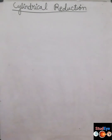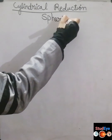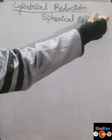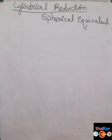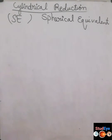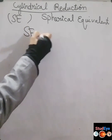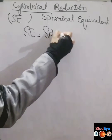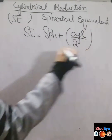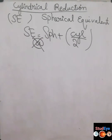Today we are going to discuss cylindrical reduction. Cylindrical reduction means you reduce the cylindrical number from the prescription. The other name of cylindrical reduction is the spherical equivalent, with the symbol SE. To calculate the spherical equivalent, you add the spherical power to half of the cylindrical power. You do not need to consider the axis of the patient in the case of the spherical equivalent.